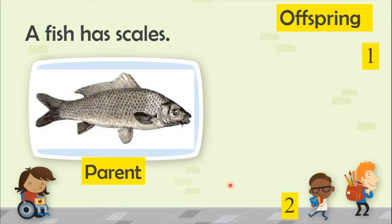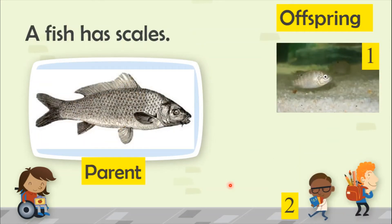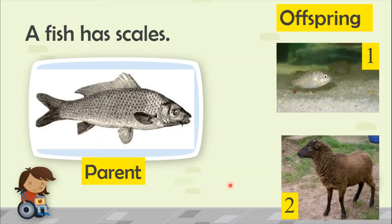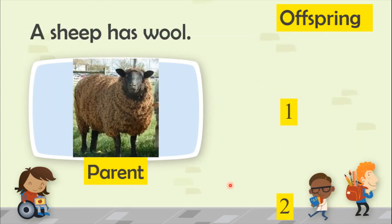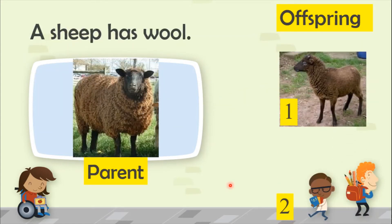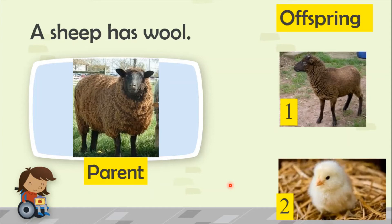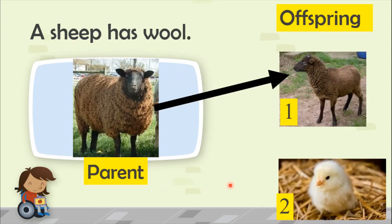A fish has scales. Where is the offspring of this parent? That's right — they both have scales, parent and offspring. A sheep has wool. Where is the offspring? That's right — they have the same shape but different sizes.